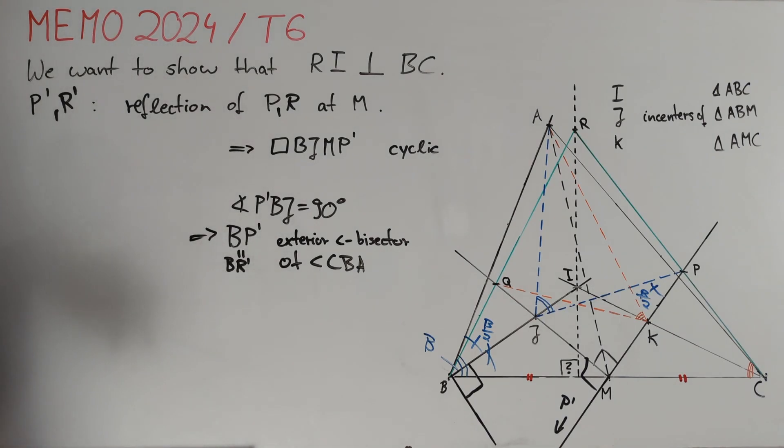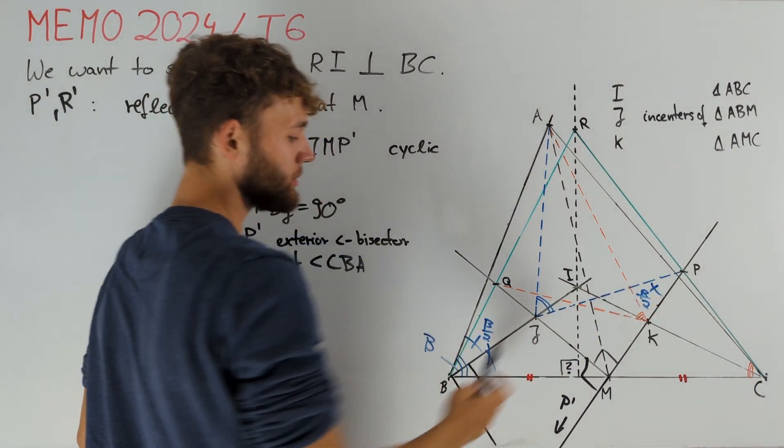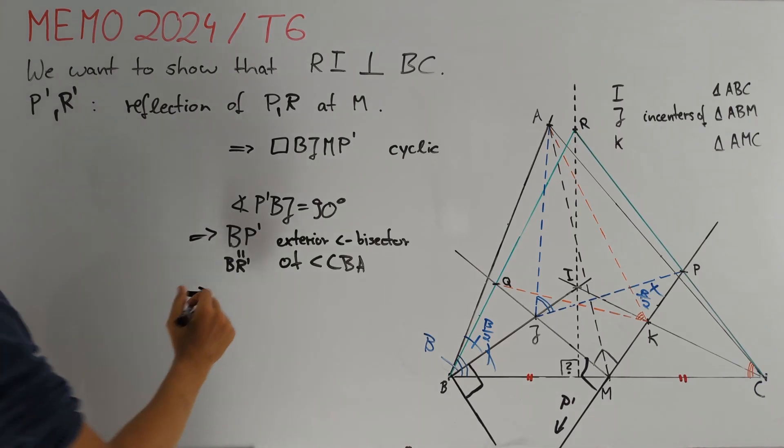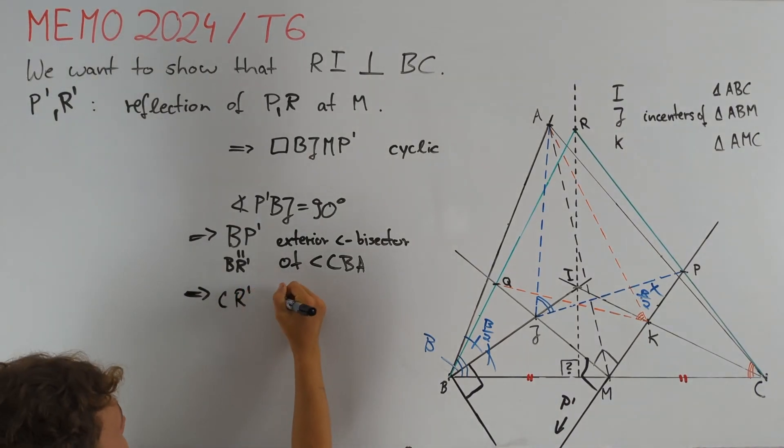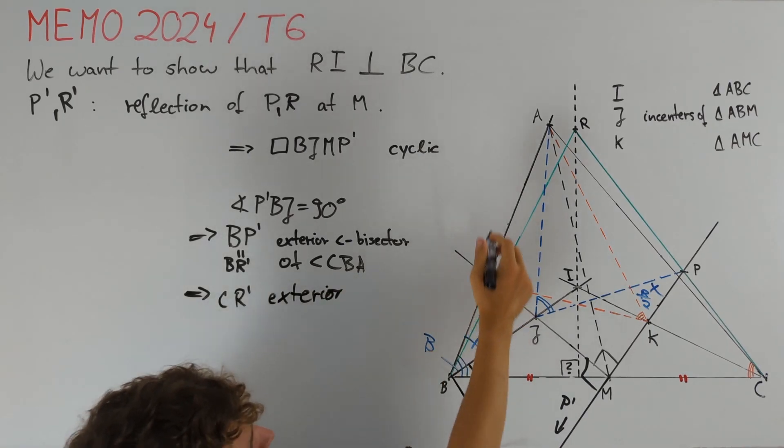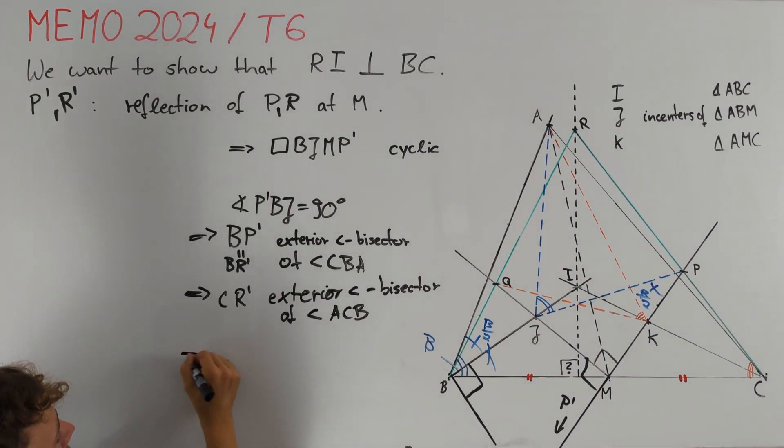In the same way, we can repeat the argument with P and Q swapped and B and C swapped to conclude that line CR' is the exterior angle bisector of angle ACB. Therefore, R' is just the intersection of these two exterior angle bisectors and, in other words, the A-excenter of triangle ABC.